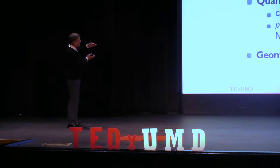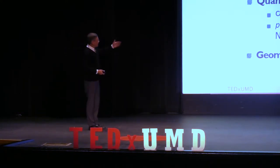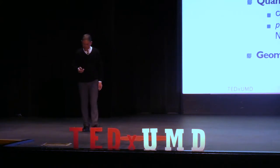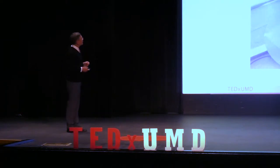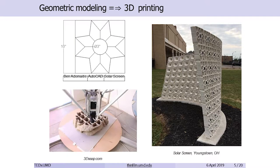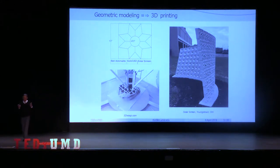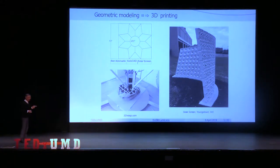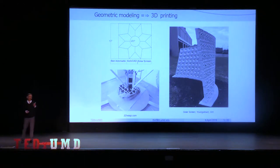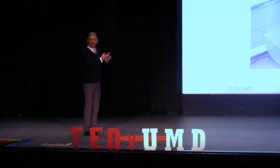We also have geometric models — we all probably consulted a map on the way here. And another thing we see in everyday operation are computer-aided design packages used to represent structures we'd like to construct, for example using 3D printing, ultimately assembled into a final product. I chose this sunscreen sculpture in Youngstown, Ohio because I like it — it's a good-looking sculpture made by 3D printing and solar-powered. It also represents a paradigm shift in manufacturing. Youngstown, Ohio is the center of a national initiative for developing additive manufacturing technologies, replacing traditional machining techniques with the next generation of advanced manufacturing.